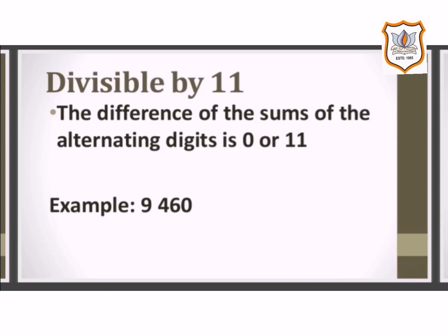If we add the digits at the even places, that is 6 and 9, we get 15. By subtracting 4 from 15, we get 11, which is divisible by 11. So we can say that 9460 is also divisible by 11.